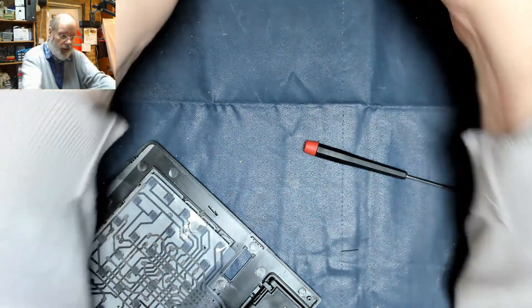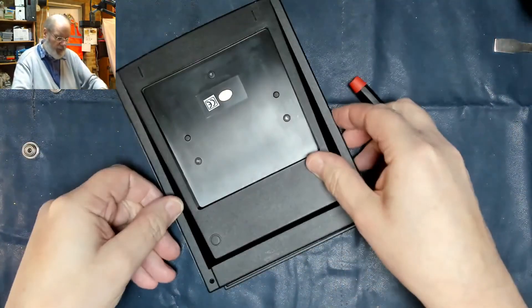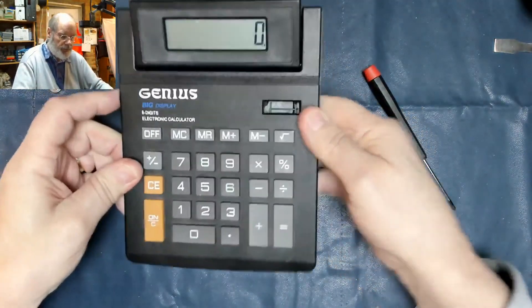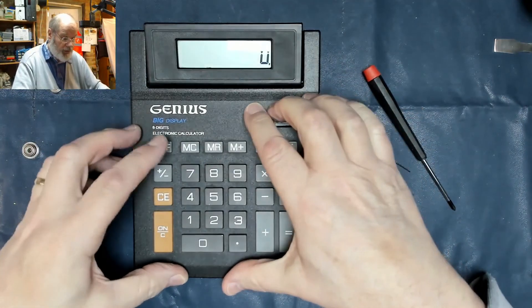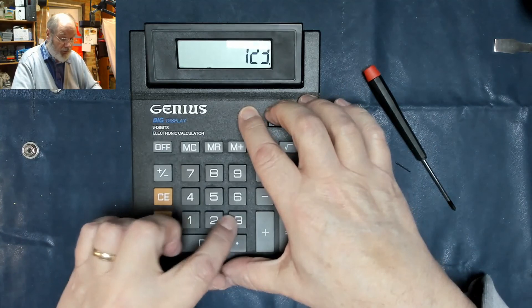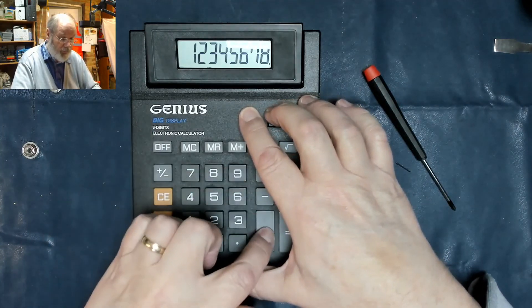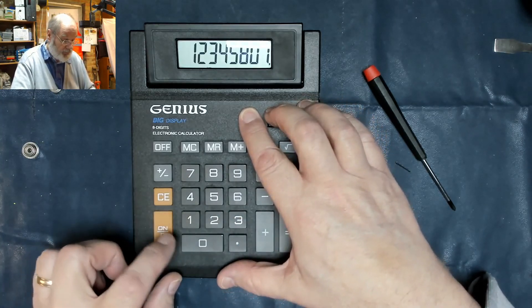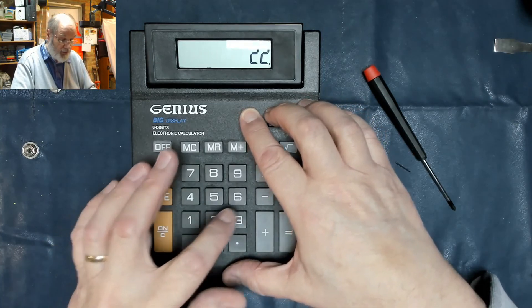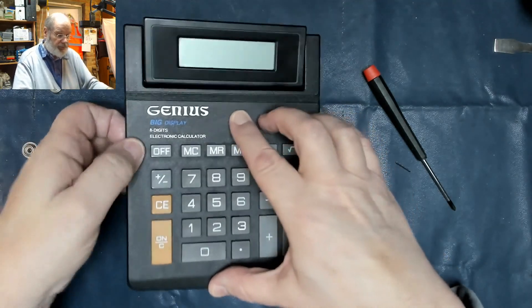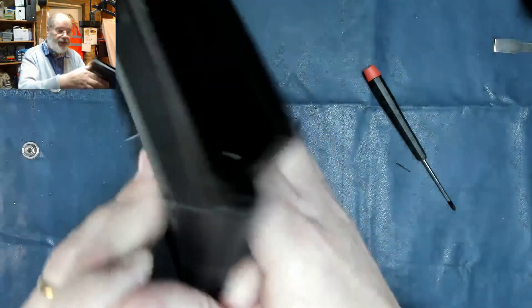All right, let's be a bit more sensible and pop the back on temporarily so we can test it. That's off, so that's on. One, two, three, four, five, six, seven, eight, nine, plus one, two, three, equals. Yep. Oh yeah, I've got all the keys in the right place and it's all working.